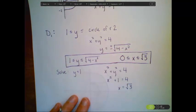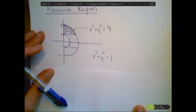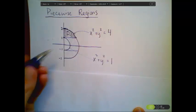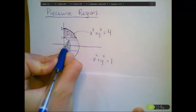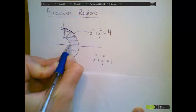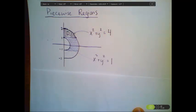Next, let's take a look at our second region. So our next region that we're going to look at is this region in here. I'm going to call it D2, and instead of thinking of it as a type 1 region, I'm going to break it up horizontally as a type 2 region. It doesn't make sense to think of it as a type 1 region.